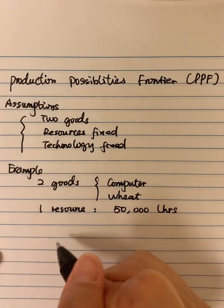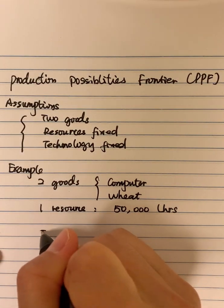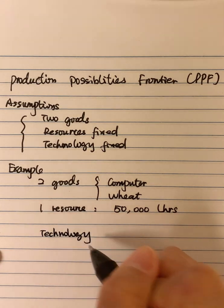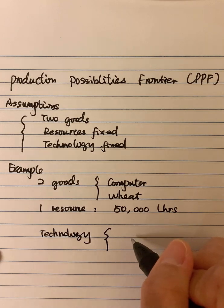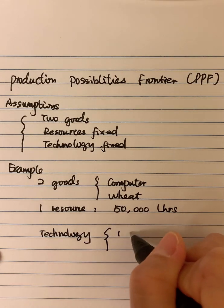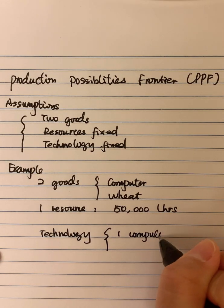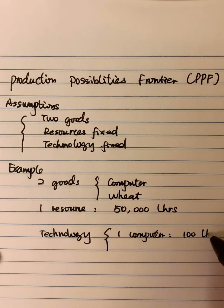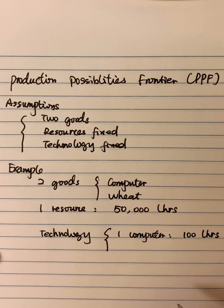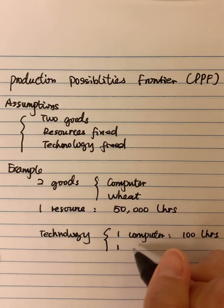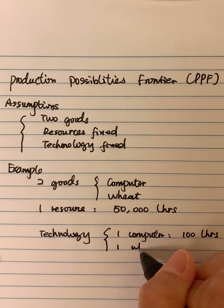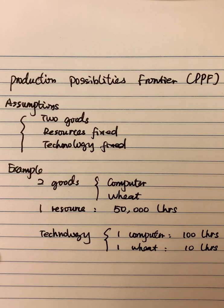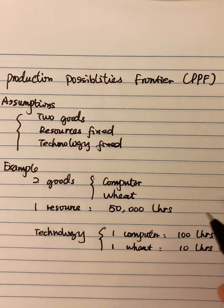And we also have fixed technology. For the technology, to produce one computer, we need to put 100 labor hours. And to produce one ton of wheat - I just simplified as one wheat - it needs 10 labor hours. So those are the given information.